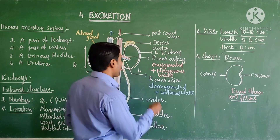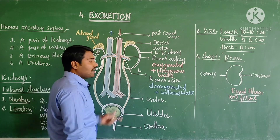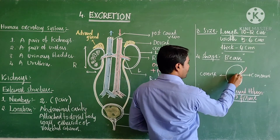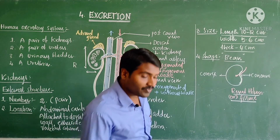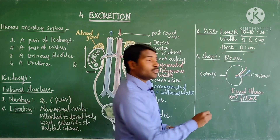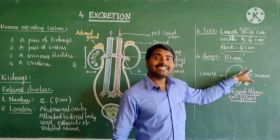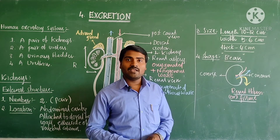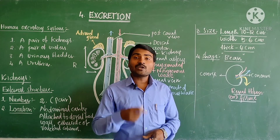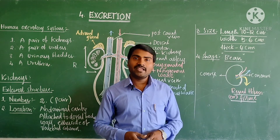The renal hilum is also known as the fissure. The renal artery enters through this part, the renal vein exits through this part, and the ureter also comes out through this part. So the renal artery enters, the renal vein exits, and the ureter exits through the renal hilum. Not only this, some nerves and lymph vessels also enter into the kidney through the hilum.